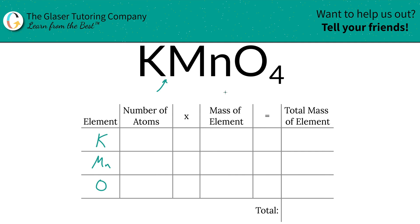Then we're going to identify the number of atoms of each, and that's where the subscripts come into play. If you don't see a subscript at the bottom of the element, assume that there is a one there. So there's one atom of each potassium and manganese, and then there are four oxygens because the subscript of oxygen is a four.